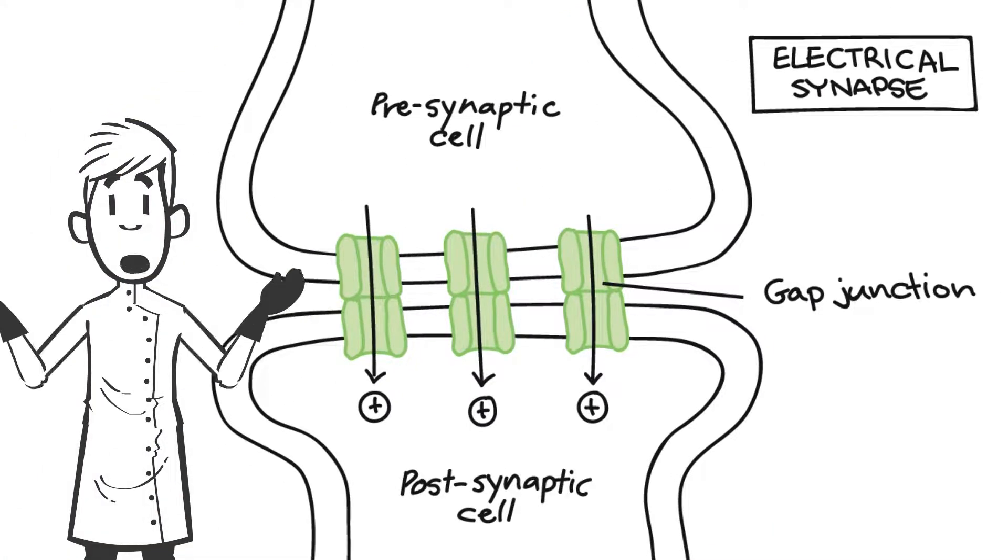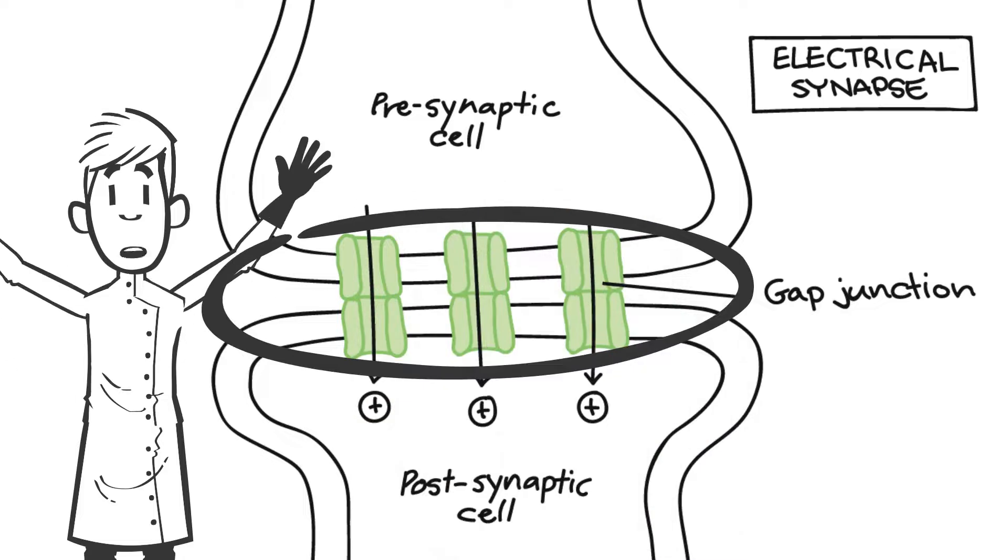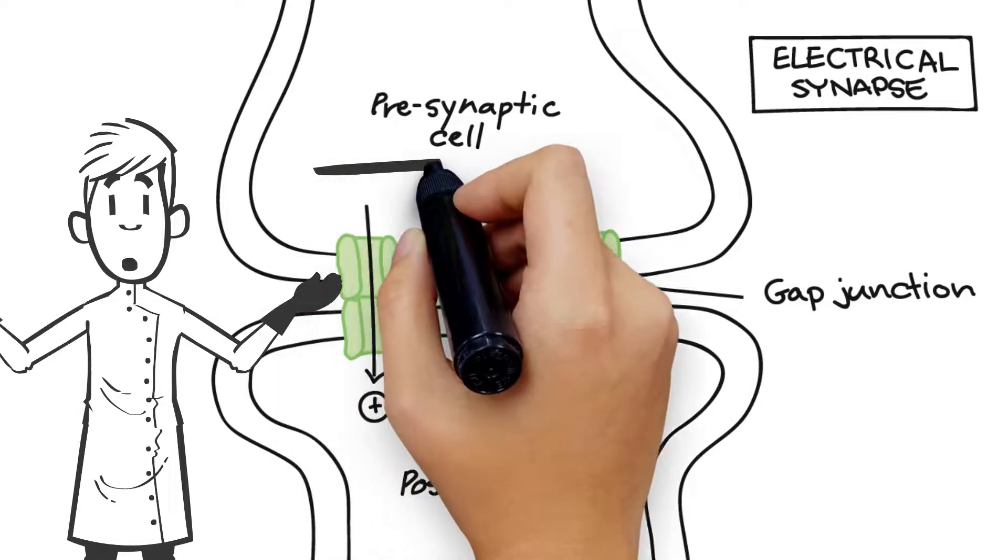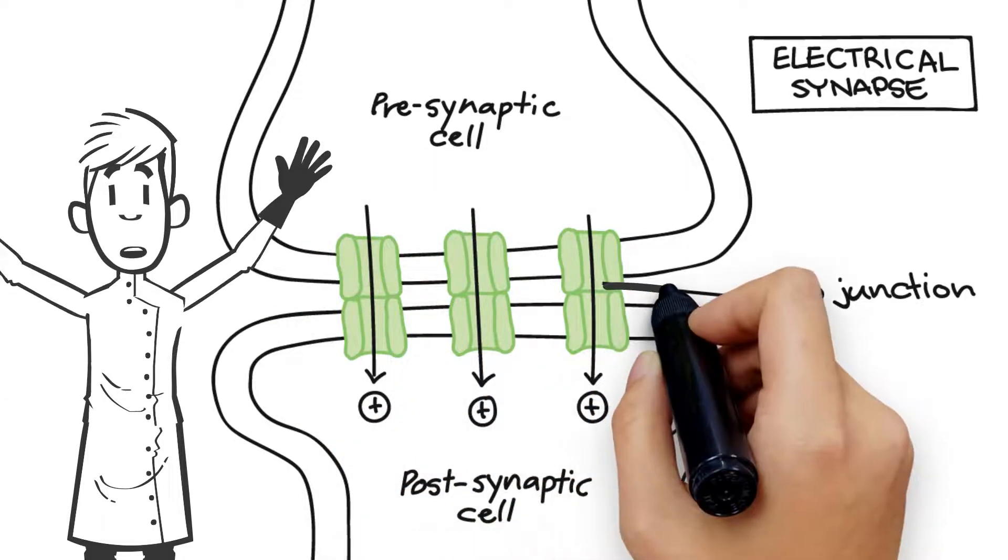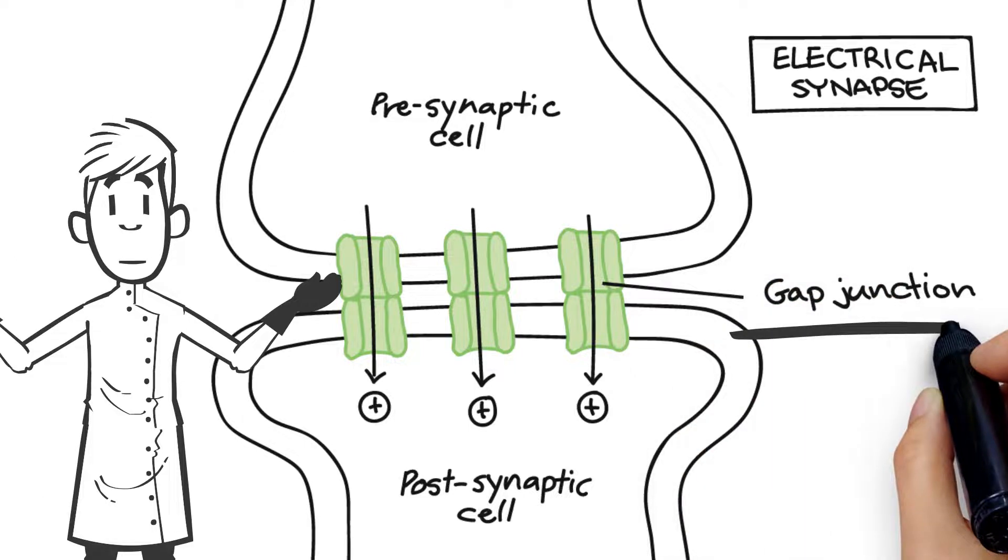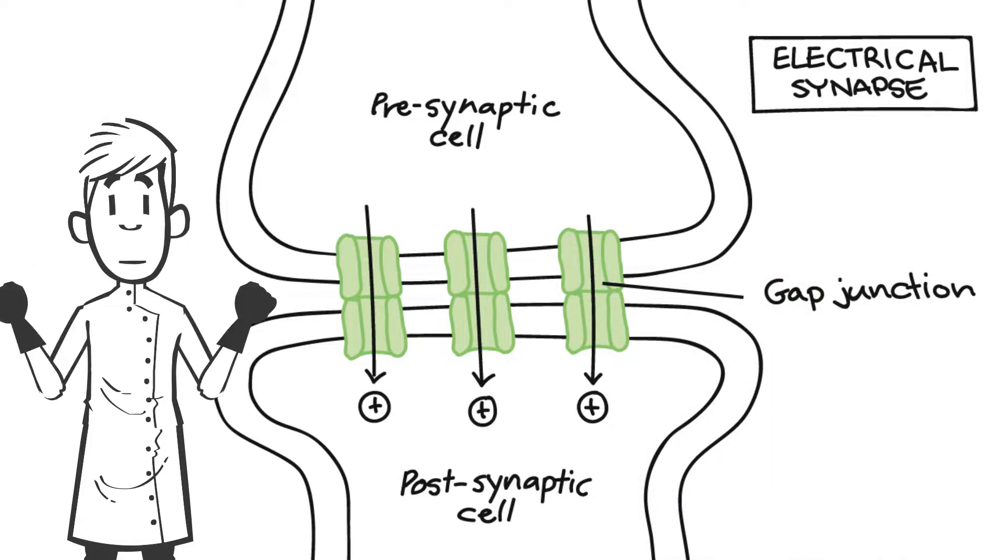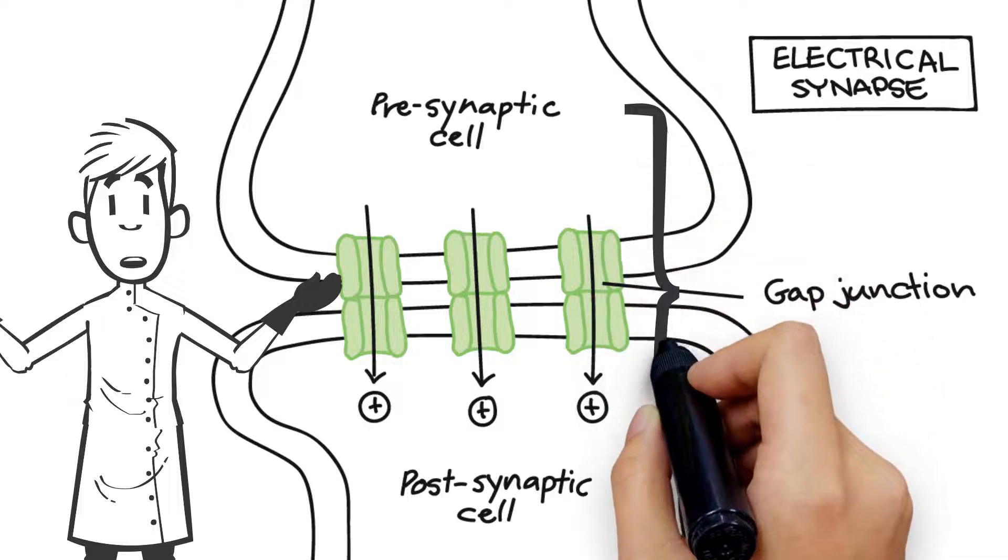On the other hand, at electrical synapses, there is a direct physical connection between the pre-synaptic and post-synaptic neurons. This connection is a channel called gap junction, which allows current, or rather ions, to directly flow from one cell to another.